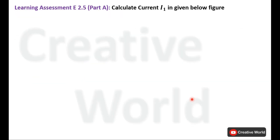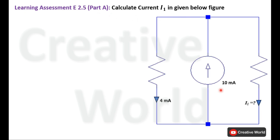Now let's move towards the problem — learning assessment E2.5 part A: calculate current I1 in the given figure. In this figure, a constant current source rated at 10 mA supplies current to two branches. One branch carries 4 mA and the other carries I1, which we need to calculate. The junction point acts as a node where the current distributes.